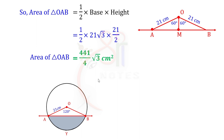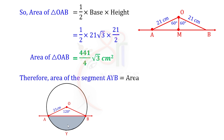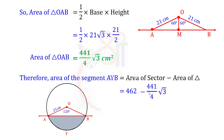Now we have the triangle area and the sector area. We find the segment area. Therefore, area of segment AYB equals area of sector minus area of triangle, which is 462 minus 441 root 3 by 4.